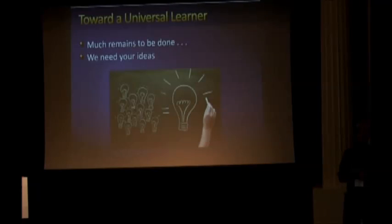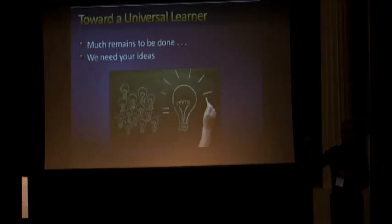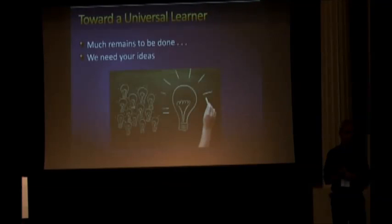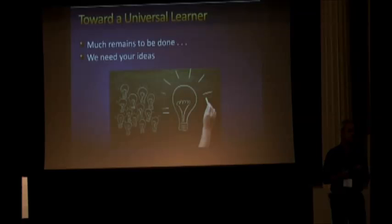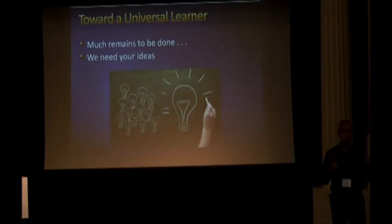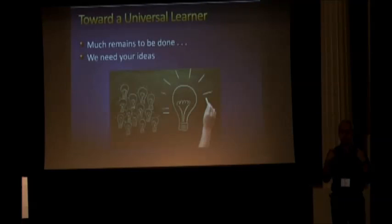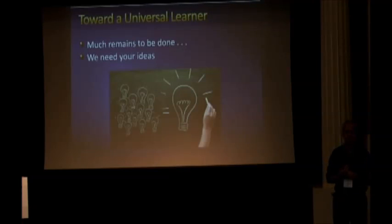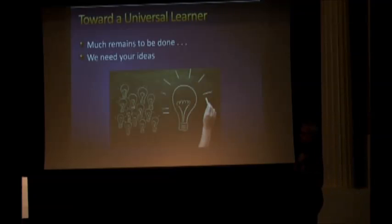This is by no means the final answer — there's still a lot to do. My suspicion is that in addition to these five ideas, there are some key ideas that no one has discovered yet. In some ways it's harder for researchers who have been in the field for a long time to come up with those ideas than someone who comes to the field with a fresh mind. So we need your help — maybe you can have the idea that actually makes the master algorithm happen.